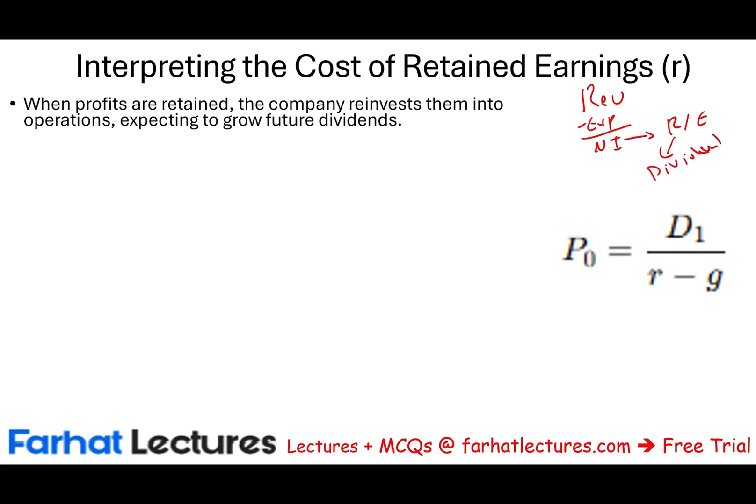The company can keep the whole net income, pay some out as dividend, and keep the rest — retained earnings is what's kept. When profits are retained, the assumption is they are reinvested into operations expecting to grow future dividends. Why would an investor say they don't want the dividend paid? Logically, the only reason is they believe the profit kept with the company is being used more efficiently than if they took it out.